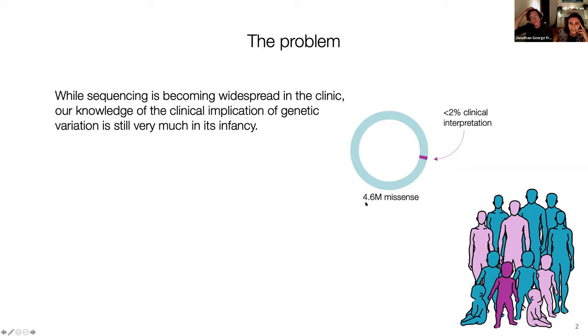our knowledge of the effects of human genetic variation is still very much in its infancy. And just to give you a notion of numbers, even though I'm sure that a lot of you are very familiar with that, out of the 4.6 million missense variants in GNOMAD, less than 2% have any clinical interpretation in ClinVar. And this is just missense, not even the whole picture of human genetic variation.